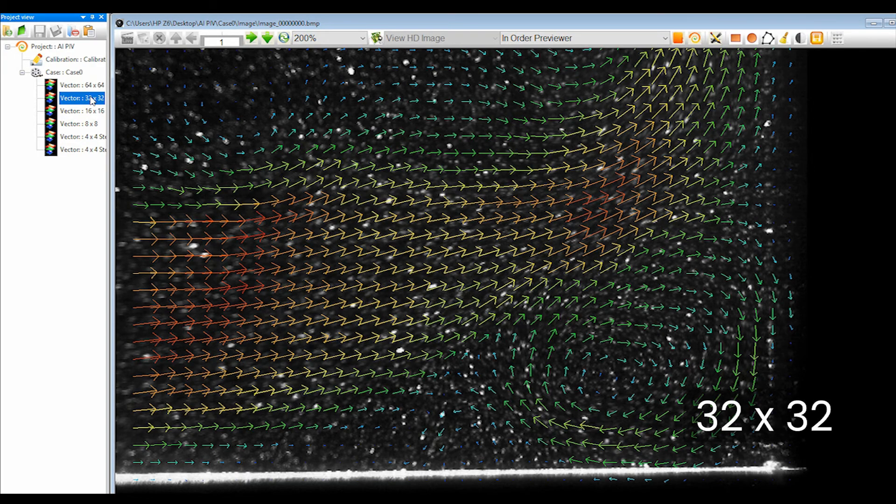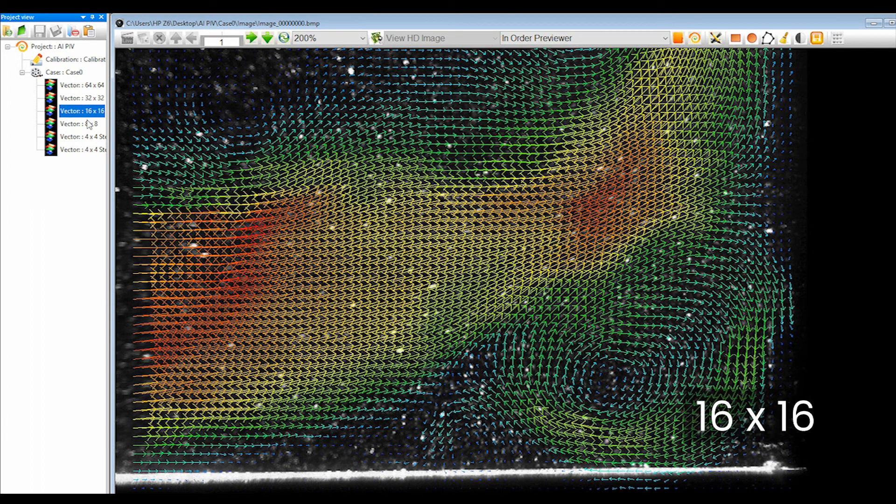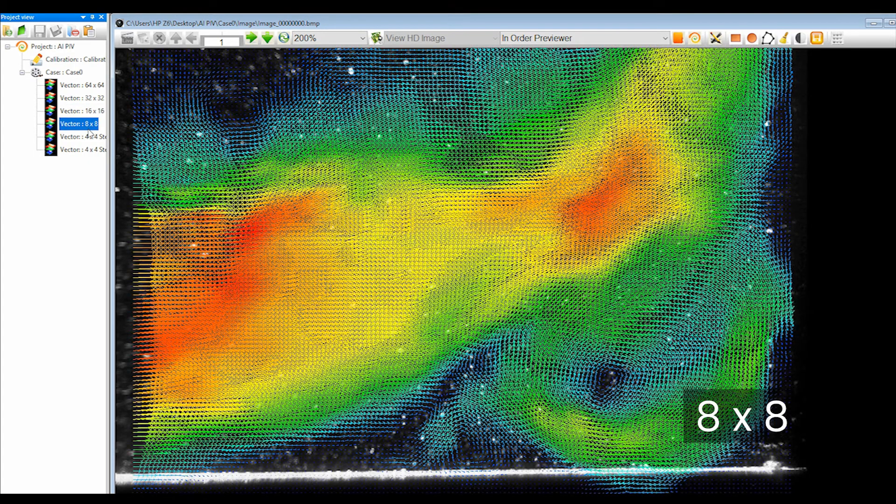The example in this video shows the measurement results of a jet flow which forms typical flow types and structures common in fluid dynamics, such as high-speed flow regions, shear flows with strong velocity gradient, and complex vortices with scales of various lengths.